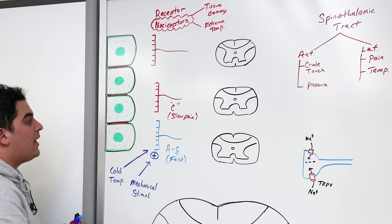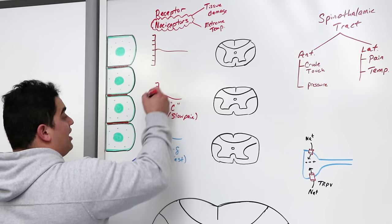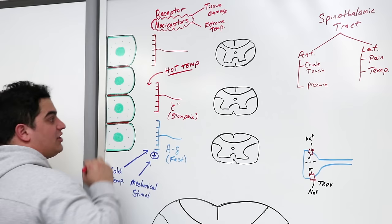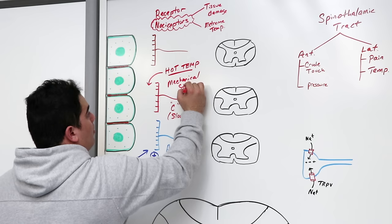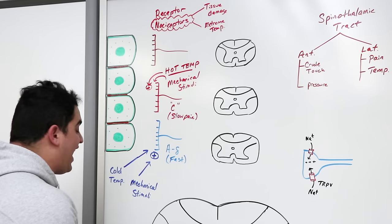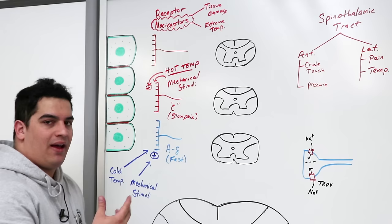What stimulates C fibers? Similar in some ways to A-delta: hot temperatures can stimulate C fibers, and mechanical stimuli can also cause activation of these nociceptors. But there's one more — and this one is more prominent: chemical factors, the chemical stimuli.